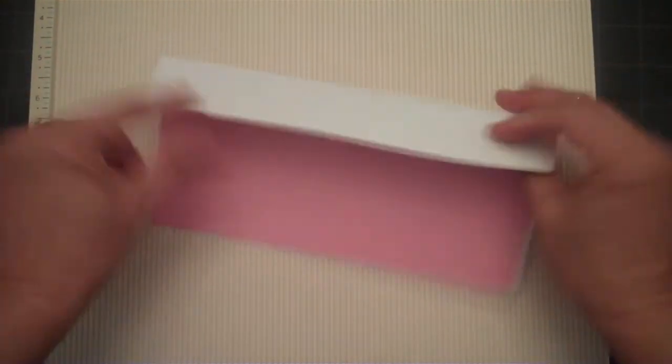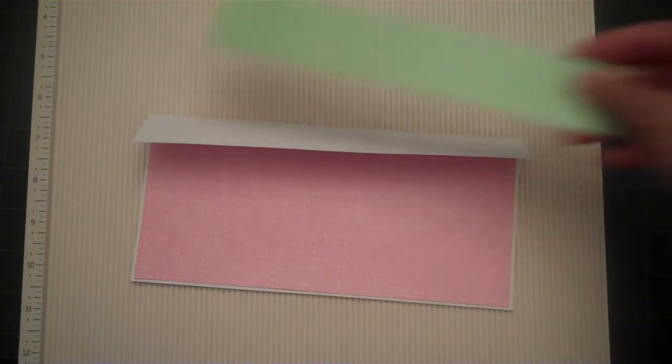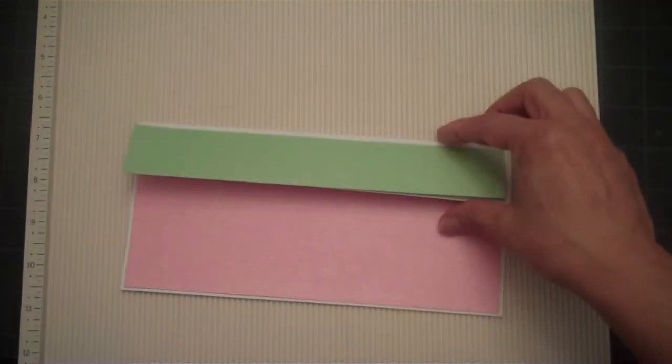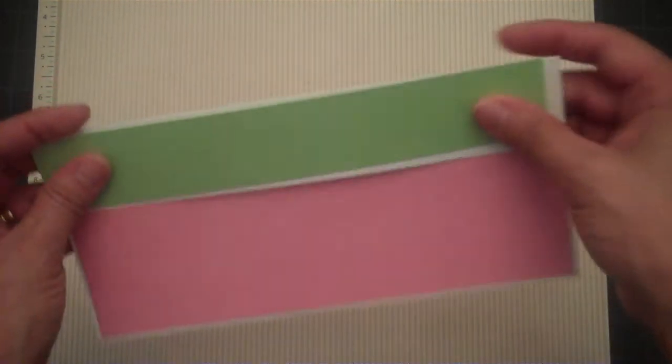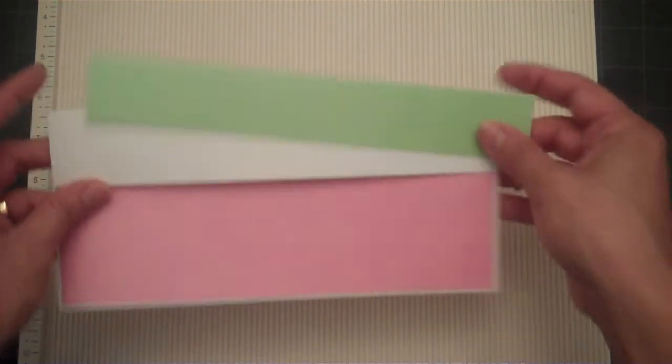And then I've got a mat for this little flap also. And I cut that out in green. And this paper is real shiny and it's got a pretty texture on it. This mat was cut at 1 3/8 x 8 1/4.